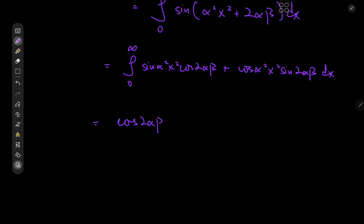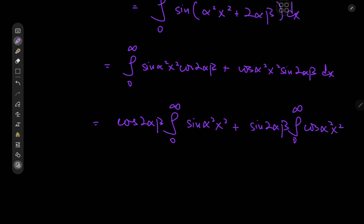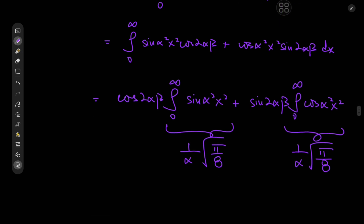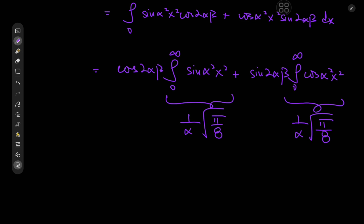We have cosine of 2 alpha beta times the integral from 0 to infinity of sine of alpha squared x squared, plus sine of 2 alpha beta times the integral from 0 to infinity of cosine of alpha squared x squared. These two are the Fresnel integrals, and we know exactly what they evaluate to — they both equal 1 over alpha times the square root of pi over 8. I've solved them numerous times using quite a few techniques; if you scroll through my channel you'll find many videos on the Fresnel integrals, including solutions via generalized Fresnel integrals and contour integration.